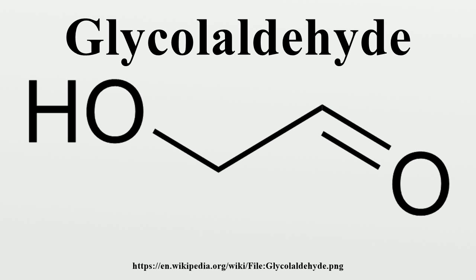Nucleotides are essential for life because they compose the genetic information and coding for life. Theorized Role in Abiogenesis: Glycolaldehyde is often invoked in theories of abiogenesis. In the laboratory, it can be converted to amino acids. Short dipeptides may have facilitated the formation of complex sugars. For example, L-valyl-valine was used as a catalyst to form tetroses from glycolaldehyde. Theoretical calculations have additionally shown the feasibility of dipeptide-catalyzed synthesis of pentoses.